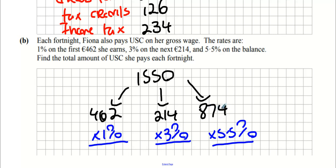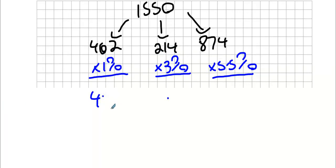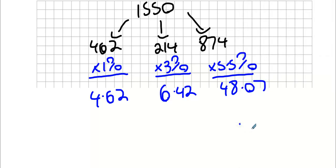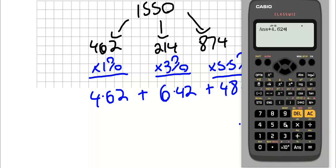The 462 gets charged at 1%, the 214 gets charged at 3%, and the 874 gets charged at 5.5%. Luke, will you take 874 by 5.5%? Kenny, will you take 214 by 3%? Sean, will you take 462 by 1%? I think this one might be 6.42. And the last one, 48 euro and 7 cents? Add them all together: 59 euro 11 cents.